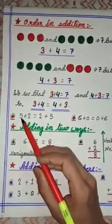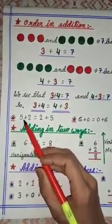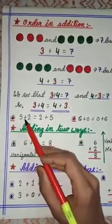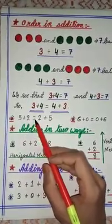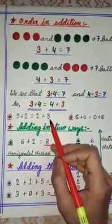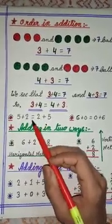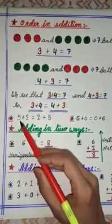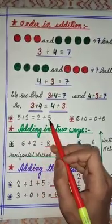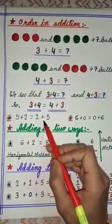See this example also. Here we have numbers 5 and 2. So 5 plus 2 equal to 2 plus 5. Because order of number does not change the sum total. 5 plus 2 will be 7 and 2 plus 5 will also be equal to 7.